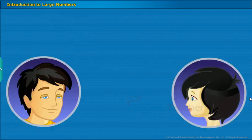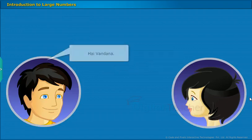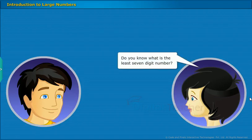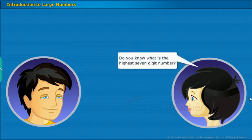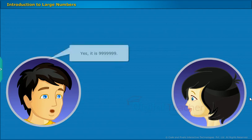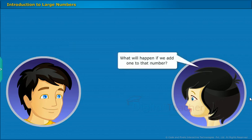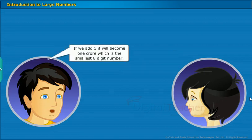Now, let us listen to the conversation between two friends. Hi, Vinay. Hi, Vandana. Do you know what is the least 7-digit number? Yes, it is 1,0,0,0,0,0,0. Do you know what is the highest 7-digit number? Yes, it is 9,9,9,9,9,9,9. What will happen if we add 1 to that number? If we add 1, it will become 1 crore, which is the smallest 8-digit number.